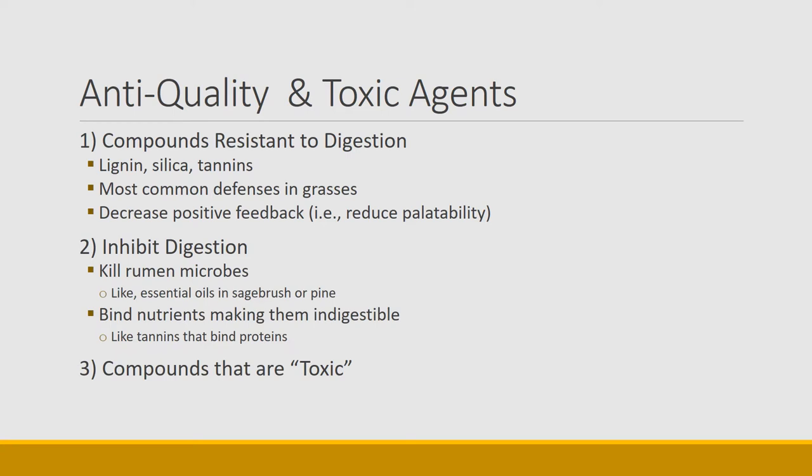Other ways that compounds can inhibit digestion is to actually kill rumen microbes. Compounds like essential oils in sagebrush or terpenes have antimicrobial effects that reduce and kill microbes in the gut, which makes it so that animals can't digest those foods. Some compounds like tannins actually bind with protein, so they inhibit digestion in a slightly different way.